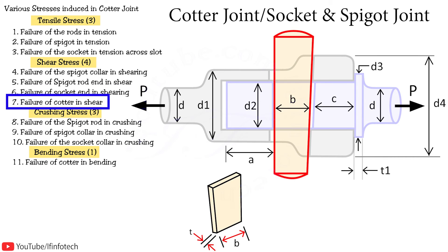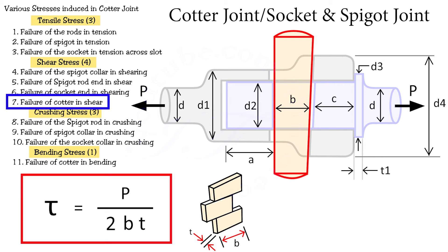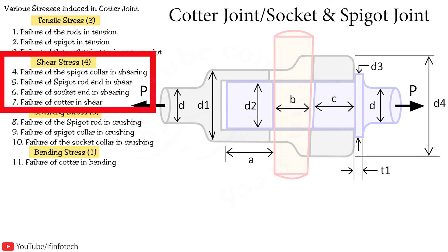The next failure occurs due to direct shear stress at the width of cotter, and the formula is load P divided by area of cross-section, i.e., 2 times width of cotter b times thickness small t. So these are the 4 shear stresses in cotter joint.